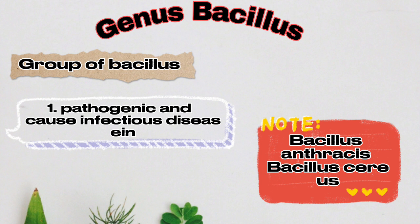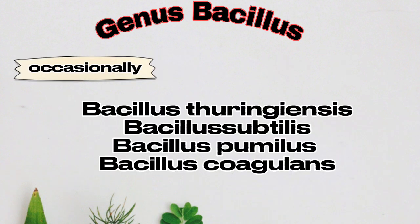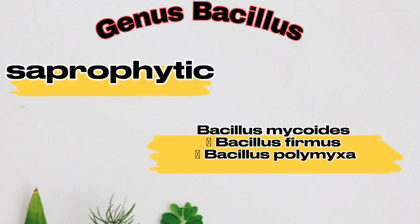Bacillus can be grouped into three groups. The first group comprises pathogenic species that cause infectious disease in many domestic animals and humans — Bacillus anthracis and Bacillus cereus. The second group comprises species that occasionally cause infectious disease in immunocompromised humans, for example Bacillus thuringiensis, Bacillus subtilis, Bacillus pumilis, and Bacillus coagulans. The third group comprises saprophytic species, for example Bacillus mycoides, Bacillus firmus, and Bacillus polymyxa.